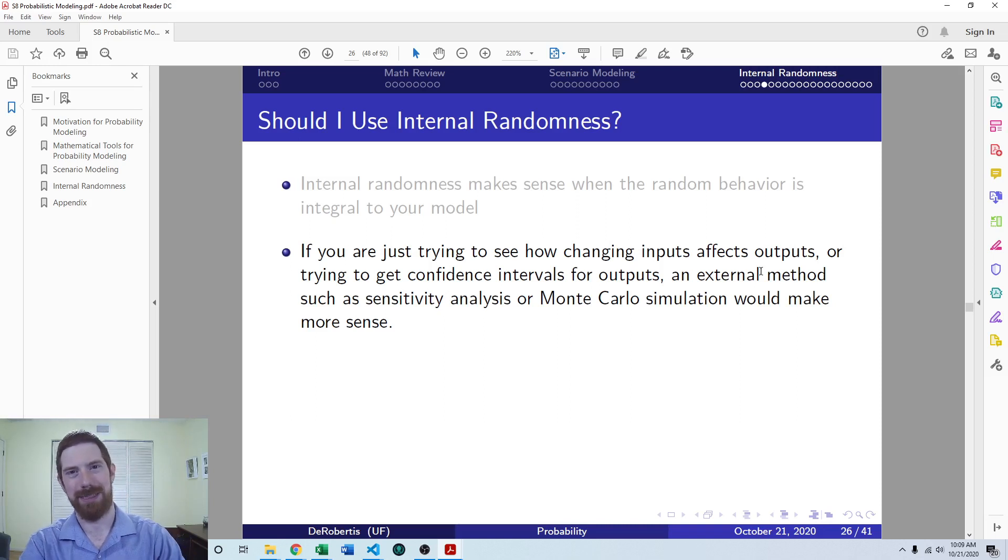Where internal randomness you're drawing inputs from some kind of distribution within the model, Monte Carlo simulation you take a deterministic model and you extend it by drawing random values for the inputs. So they can both accomplish a lot of the same goals. But going with Monte Carlo simulation means that your original core model is still deterministic, and so it's still easy to evaluate and check and understand.